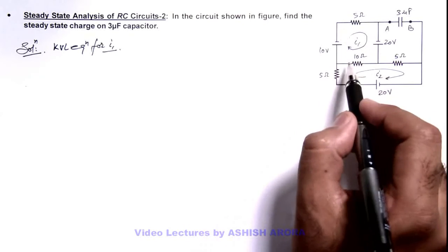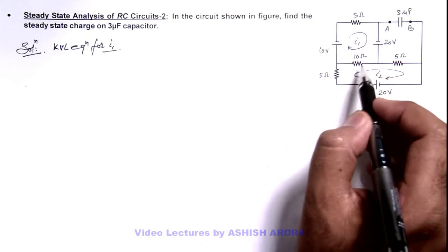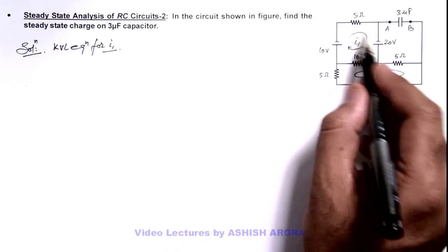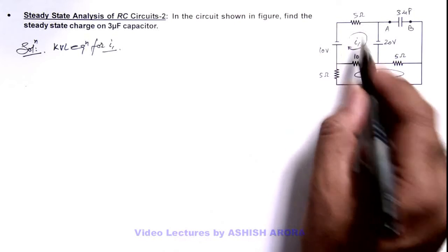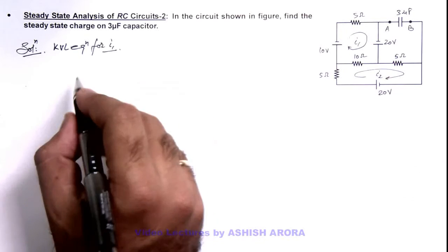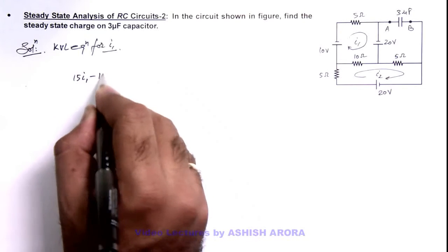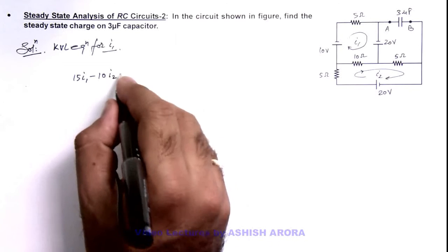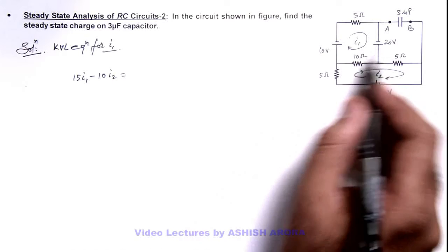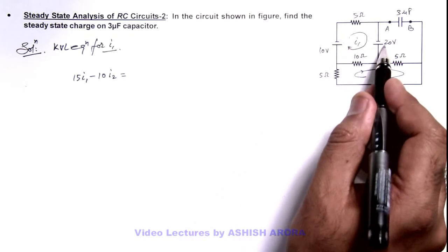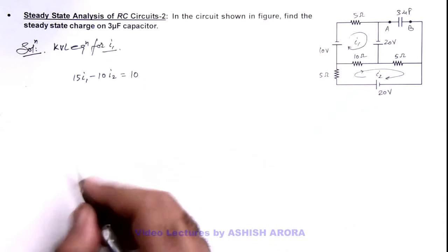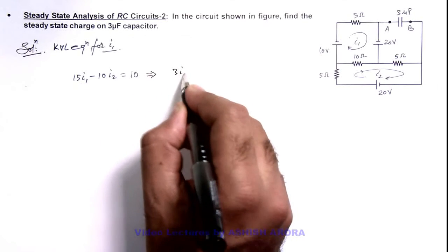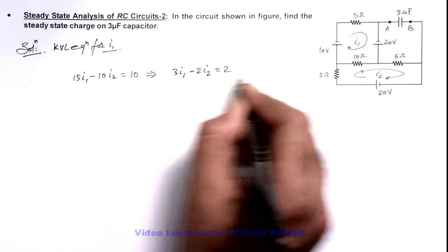In this loop, we can write the KVL equation as: the sum of the total potential drop across all resistances of the loop is equal to the total EMF. Here the 5 ohm and 10 ohm resistances give a total potential drop of 15I1 minus 10I2, because in the 10 ohm resistance I2 flows in the opposite direction. This equals the total EMF of 20 minus 10, which is 10. Simplifying gives us equation 1: 3I1 - 2I2 = 2.